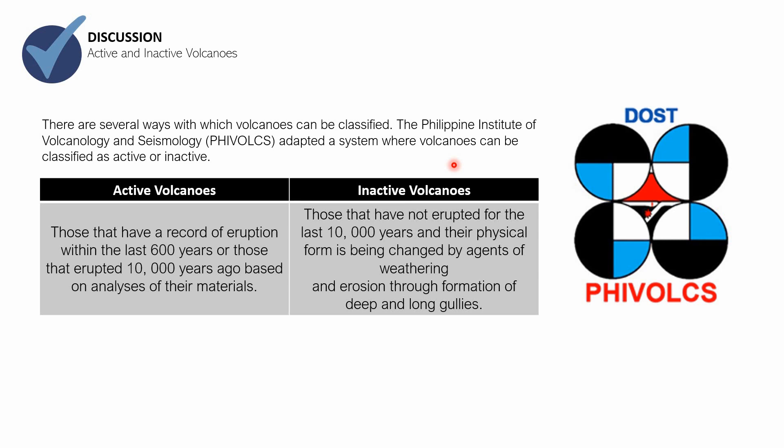I hope you understand that. There are historical records — records that humans kept of eruptions. If we have a record of eruption within the last 600 years, it is active. Now, if there are no historical records, we can still use the materials extruded from the volcano. Even without human-recorded history, if those materials prove that an eruption occurred within 10,000 years ago, we can still classify it as an active volcano.